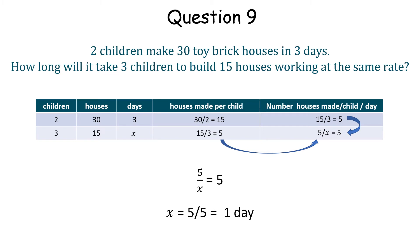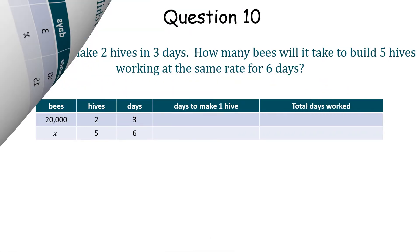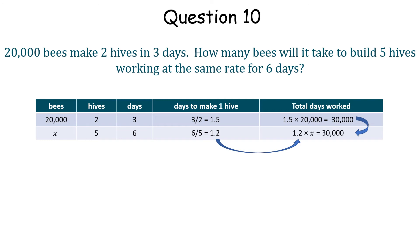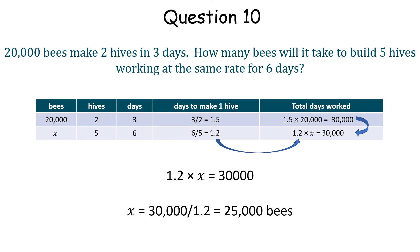If it takes 3 days to build 2 hives, then it takes 1.5 days to build 1 hive. 20,000 bees working for 1.5 days to make 1 hive is 30,000 total days worked. Now we have 6 days to build 5 hives, taking 1.2 days to build 1 hive. Therefore, making and solving a similar equation with a total of 30,000 days worked to build 5 hives, it takes 6 days and 25,000 bees.